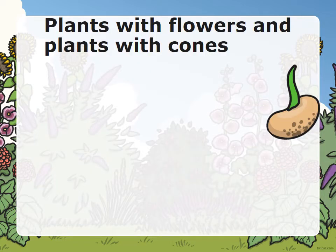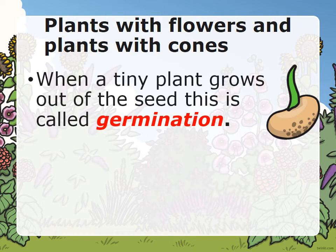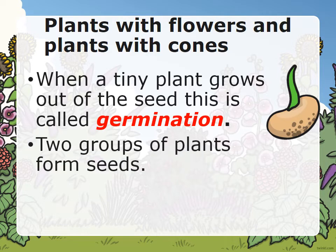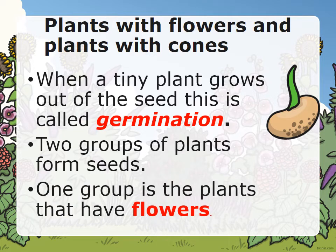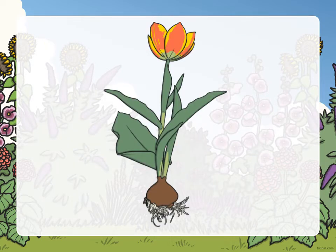Plants with flowers and plants with cones — can we tell the difference? When a tiny plant grows out of the seed, this is called germination. Two groups of plants form seeds. One group is the plant that has flowers. Here is a plant with a flower.